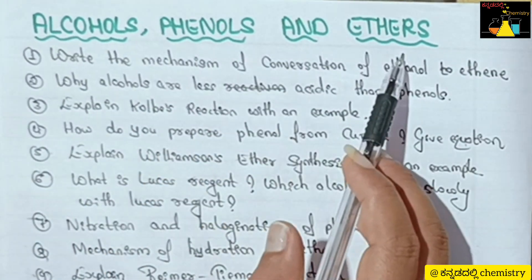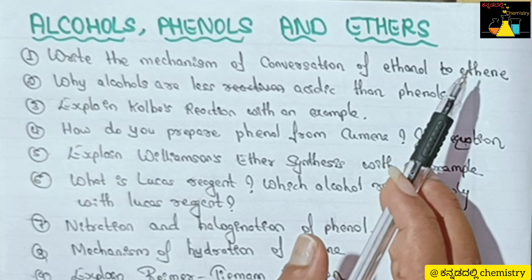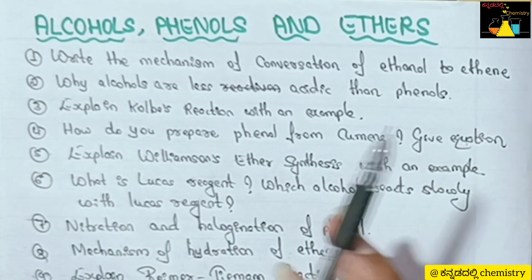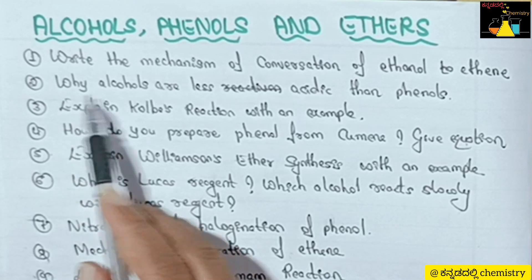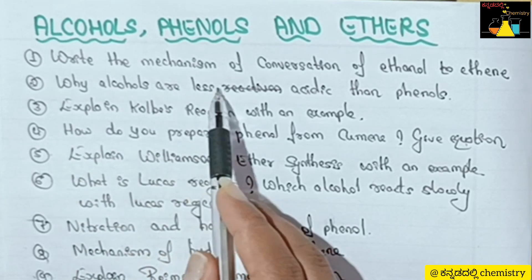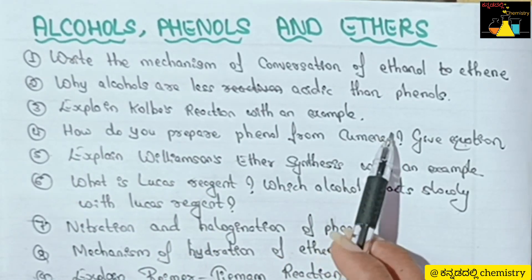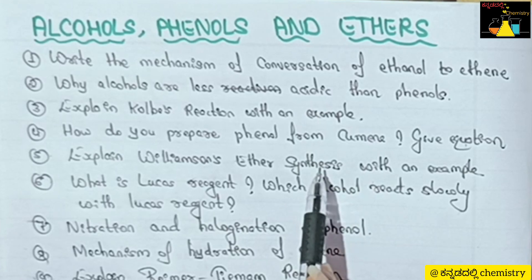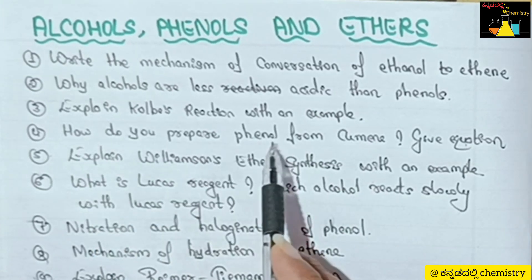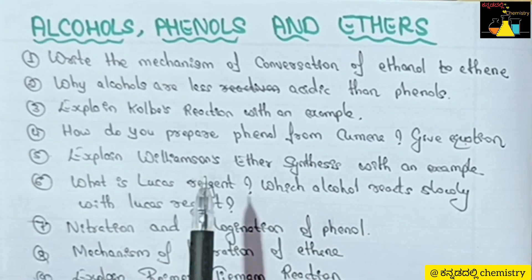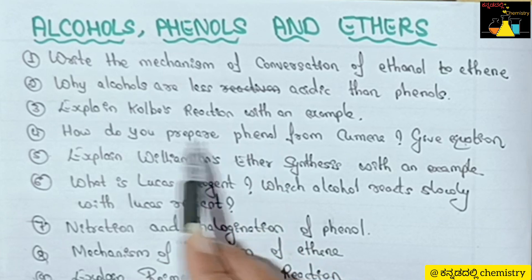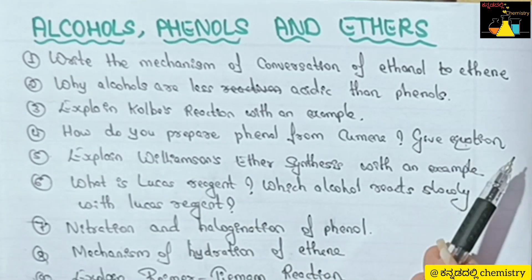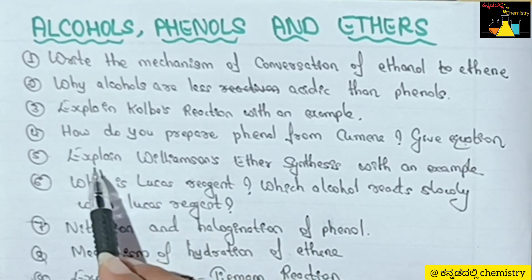Next, from the Alcohols, Phenols and Ethers lesson: Write the mechanism of conversion of ethanol to ethene. Why are alcohols less acidic than phenols? Explain Kolbe's reaction with an example. How do you prepare phenols from cumene? Give the equation. The equation carries 1 mark, so total is 3 marks.